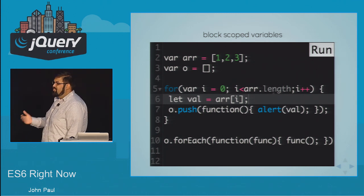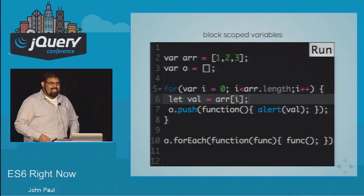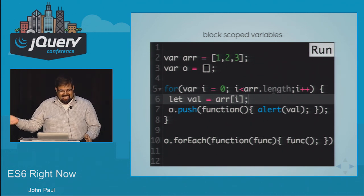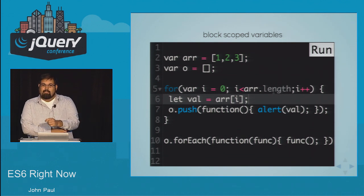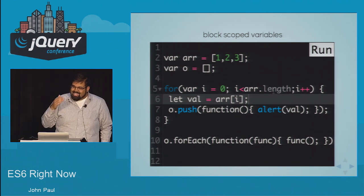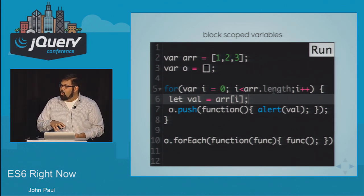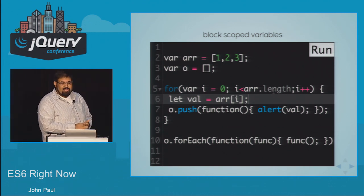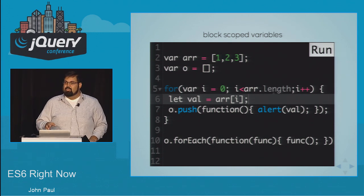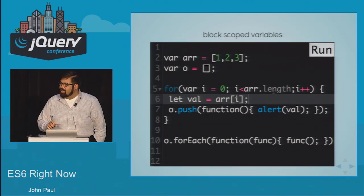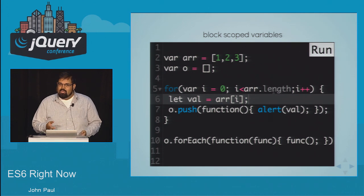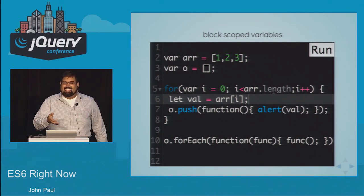What ECMAScript 6 does is add a new way of declaring a variable — a new keyword called 'let'. What let does is create a variable that is scoped to that particular block, meaning between these two curly braces. Now when I run this, I get one, two, and three. Using the let keyword, I can create variables scoped to the particular block they're in. This is something that C and C++ have — the way most languages with C-like syntax work. JavaScript by itself has variables in global or function scope, until the introduction of let, which adds block scoping.